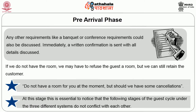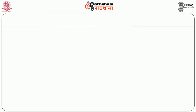It is essential that the following stages of the guest cycle do not conflict with each other. Reservations must be completed and room availability confirmed before the guest arrives, all happening in the pre-arrival phase. Now we move to the second phase of the guest cycle — the arrival phase — which is more important than the earlier phase.